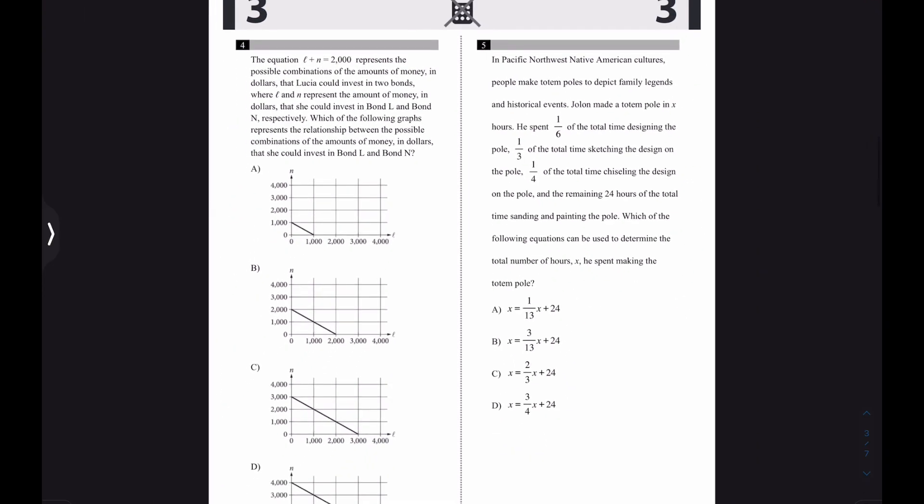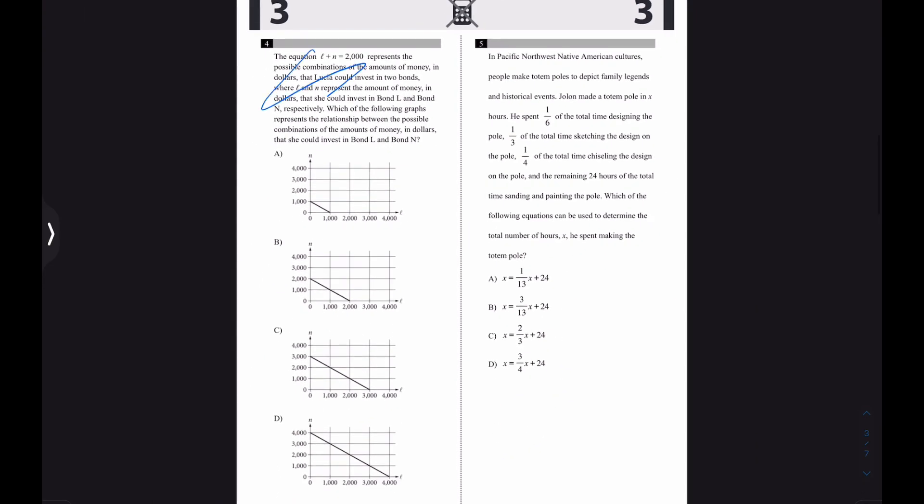Let's keep going. Come down here for number four. It says, I'm not reading really any of that. It says which of the following possible graphs, combinations of the amount of money in dollars that she can invest in L or N? Interesting. Well, there is an equation here. So L plus N equals 2000. I mean, it looks like the answer is B. Why? Well, because you could buy 2000 of one and not get any of the other. And then here, same thing. You could get 2000 of one and not get any of the other. Yeah, the answer is B.